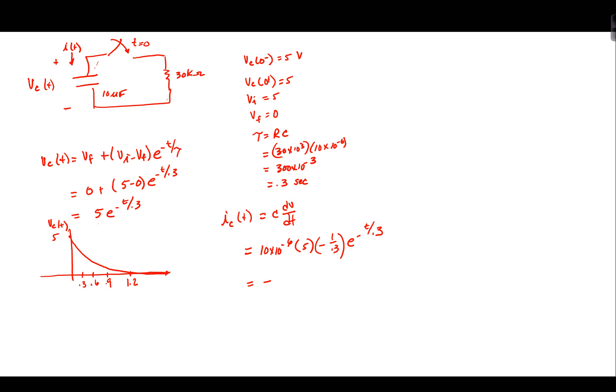e to the negative t over 0.3 amps, or might be more inclined to write it as a negative 0.17 e to the minus t over 0.3 milliamps. Okay, what does that look like? Let's graph that thing. I'm going to do it in a different color here for the current.